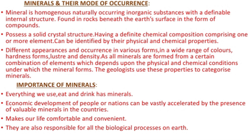The first topic of this chapter is minerals and their mode of occurrence. Minerals, as you know, are naturally occurring homogeneous inorganic substances. They have their own internal structure. These are rocks found on the earth's surface in compound form. The structure is a solid crystal structure, in which chemical properties depend on its elements. These are physical and chemical properties. Different appearances and occurrences include color, hardness, lustre, and density. All minerals are made in combination of elements under chemical and physical conditions, which geologists categorize accordingly.